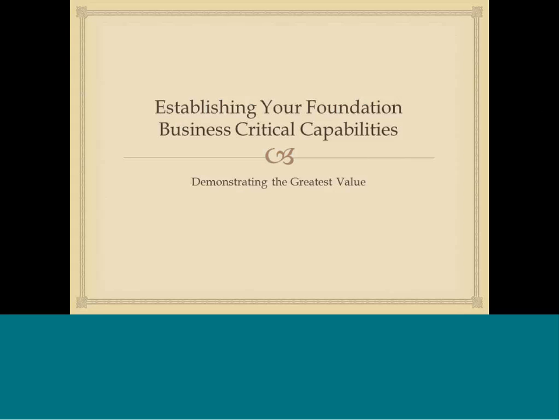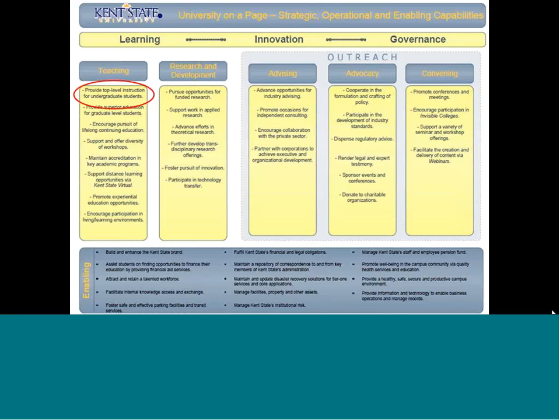How do we go about creating a business on a page and what does it look like? This is an example for a university — we call it a university on a page. We see strategic, operational, and enabling capabilities through this view. At the very top, learning, innovation, and governance would be the university's strategic goals and strategic capabilities. Those are the capabilities that we're always designing to when we're designing our business.